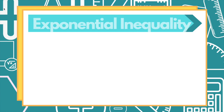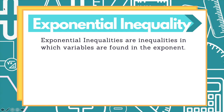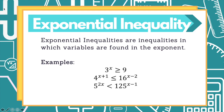An exponential inequality is an inequality in which variables are found in the exponent. Examples are: 3 raised to x greater than or equal to 9; 4 raised to x plus 1 less than or equal to 16 raised to x minus 2; and 5 raised to 2x less than 125 raised to x minus 1.